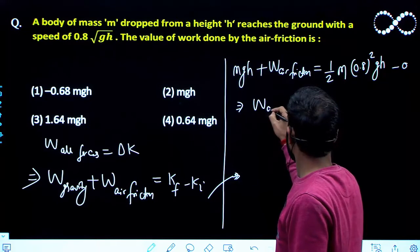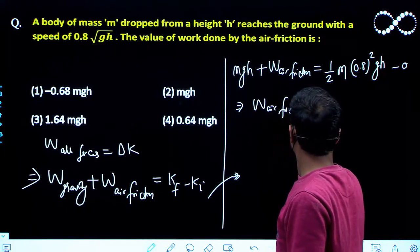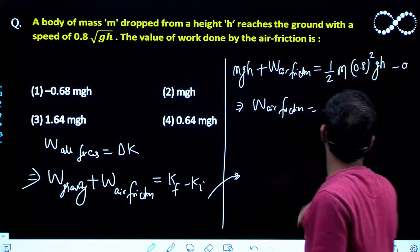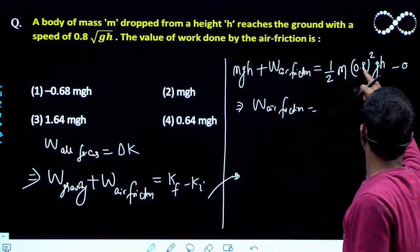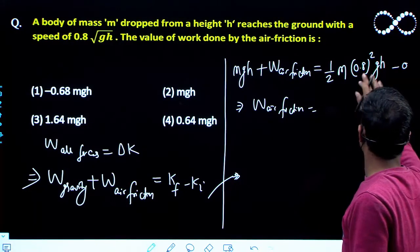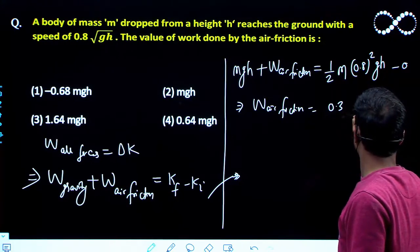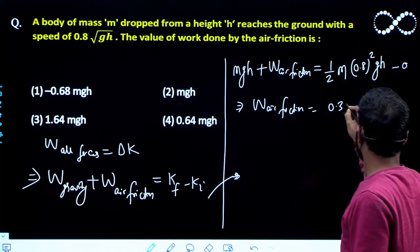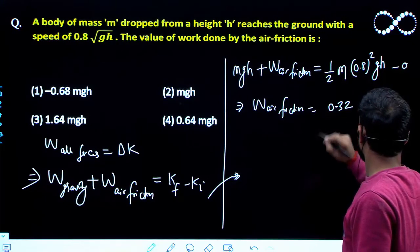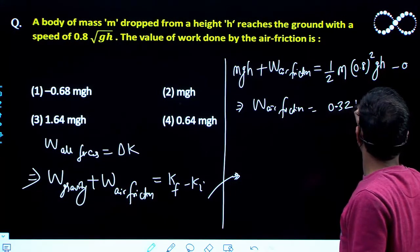So this will become work done by air friction equals, if you do this calculation, you will get this will become 0.64 and this is 0.32, 0.32 mgh.